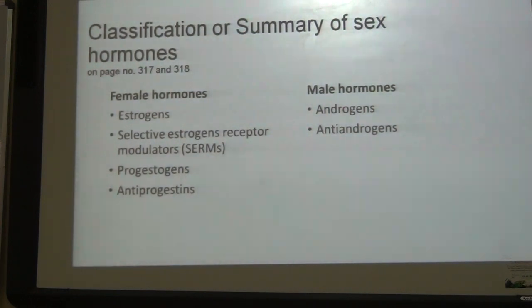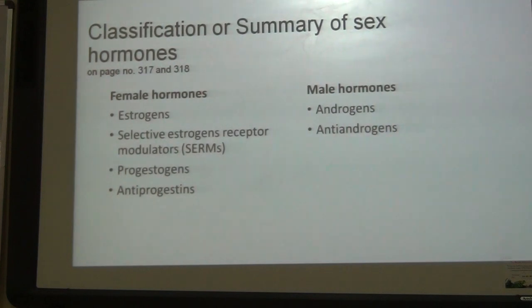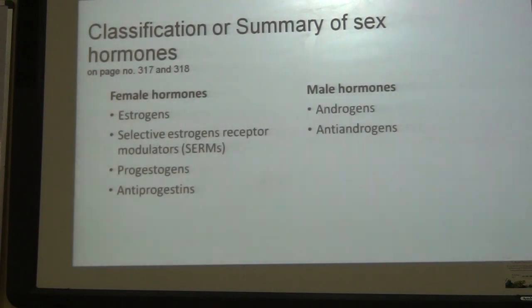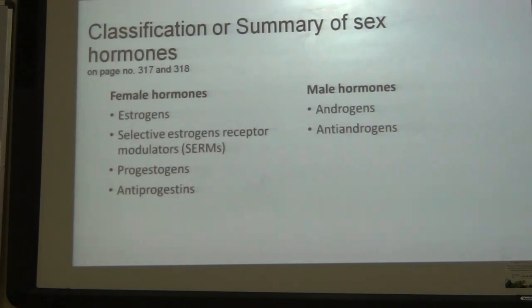Sex hormones can be divided into female hormones and male hormones. The main female hormones are estrogens, then we have SERMs — selective estrogen receptor modulators — progestogens, anti-progestins, and male hormones include androgens and anti-androgens. For detailed study, please consult those pages.